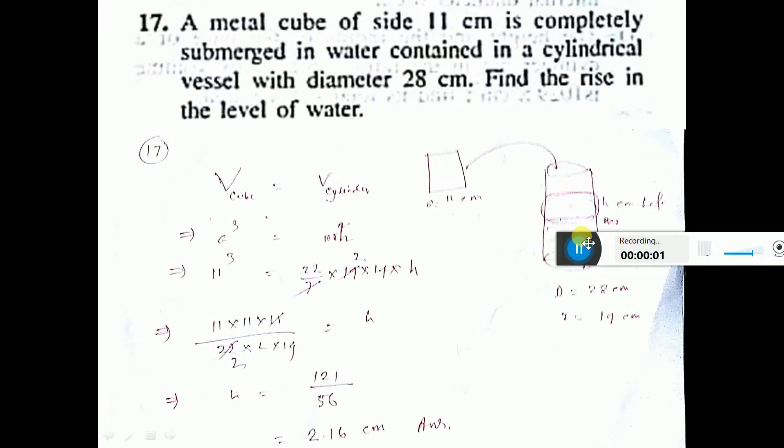Now we will do this sum. A metal cube of side 11 cm is completely submerged in water contained in a cylindrical vessel with diameter 28 cm. Find the rise in level of the water.